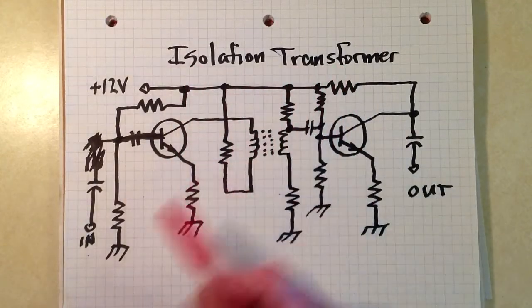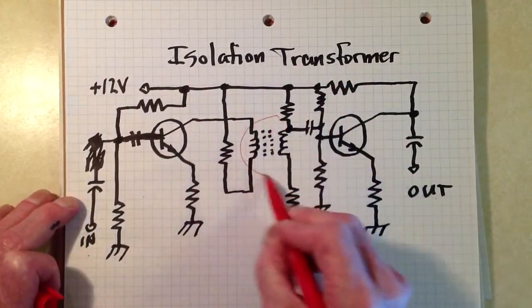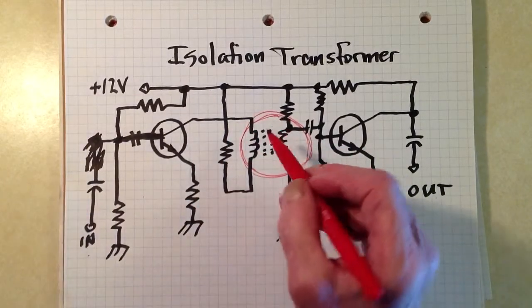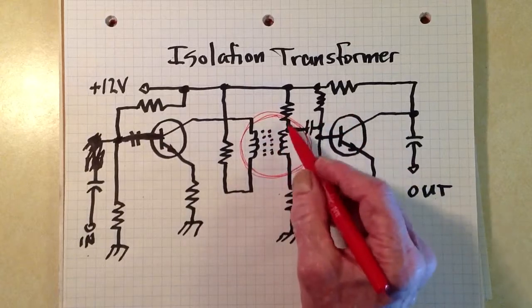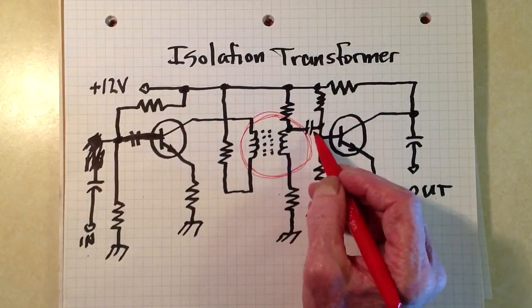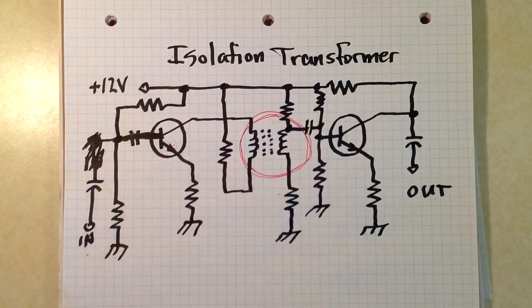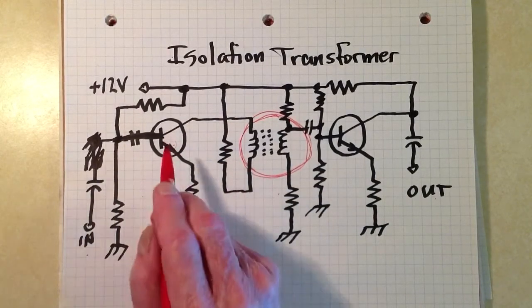When you use transformer coupling as shown here, and here is the transformer right there, that transformer keeps the DC that makes this transistor work and the DC that makes that transistor work separate from each other.